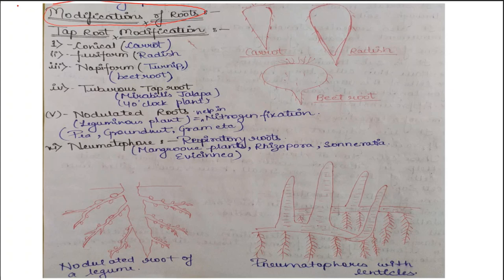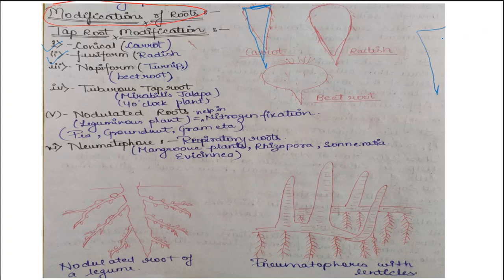Let's discuss tap root modifications. First is the conical root, found in carrot. The structure is broad at the base and tapers towards the tip — it looks like an inverted cone, so we call it a conical root. Second is the fusiform root, seen in radish. The difference is that in conical, it is broad at the base with a steep slope to the tip, whereas in fusiform, the root is thickened in the middle part.